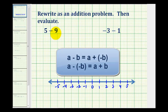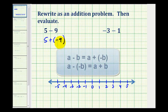So five minus nine is equivalent to five plus negative nine. Thinking of this in terms of money, taking away nine dollars is the same as adding a loss of nine dollars.